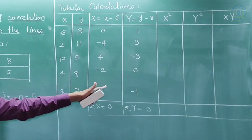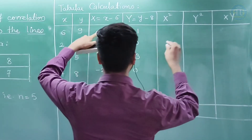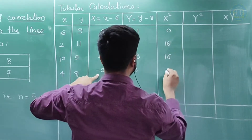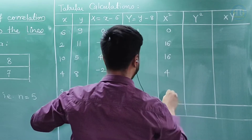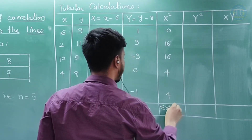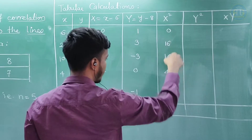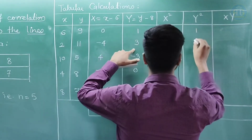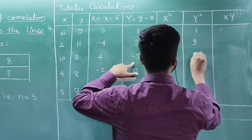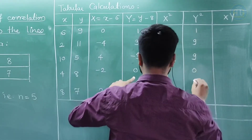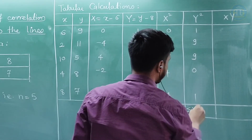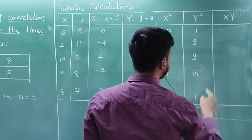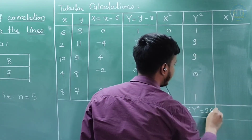Now doing calculations faster: X square values are 0, 16, 16, 4, 4. Summation X square is 40. Then Y square: 1 squared is 1, 3 squared is 9, 3 squared is 9, 0 squared is 0, minus 1 squared is 1. So summation Y square comes out to be 20.